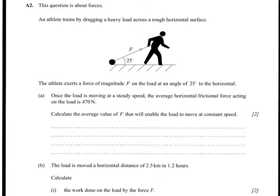An athlete trains by dragging a heavy load across a rough horizontal surface. The athlete exerts a force F on the load at an angle of 25 degrees to the horizontal. Once the load is moving at a constant speed, the average horizontal friction force acting upon the load is 470 newtons. Calculate the average force that will enable the load to move at a constant speed.